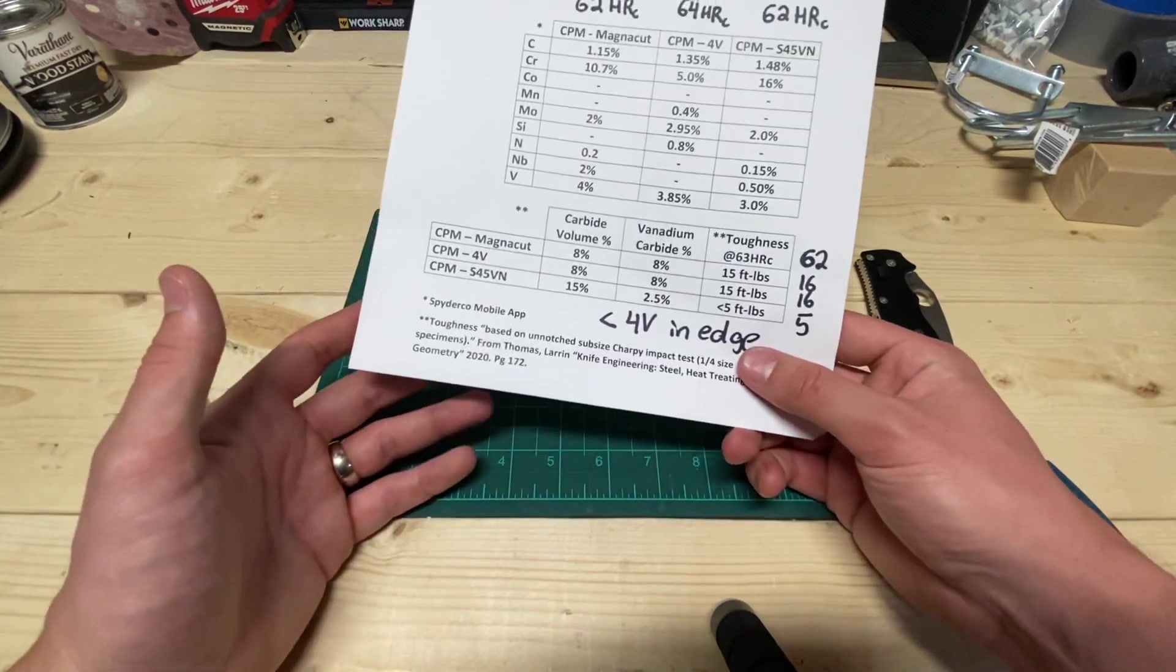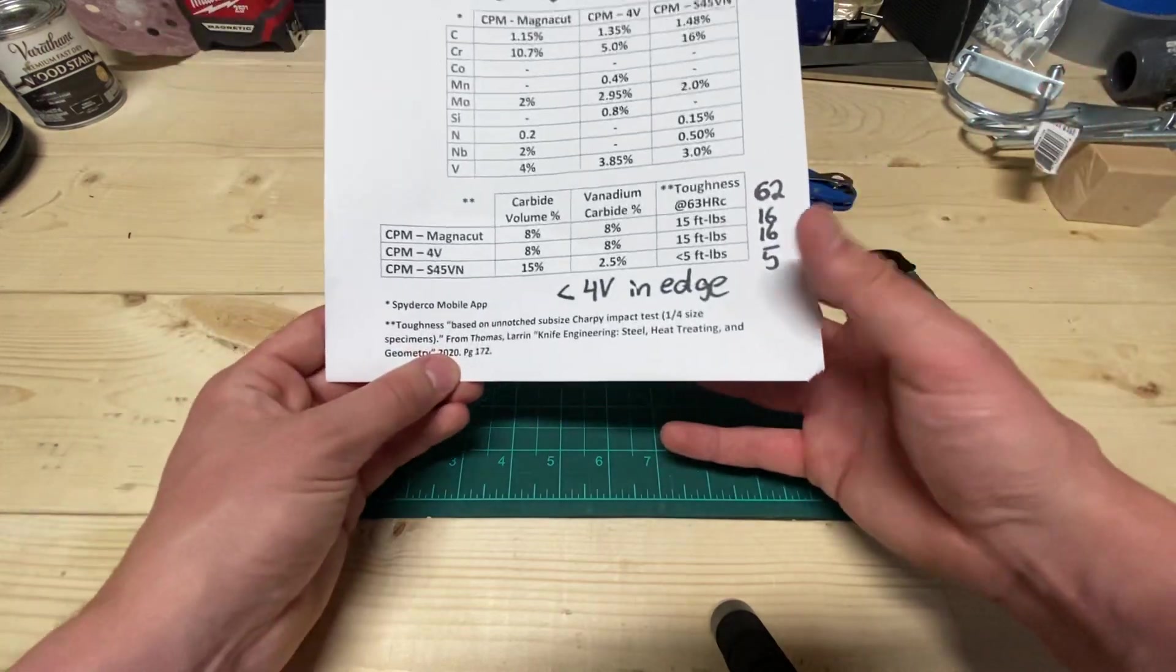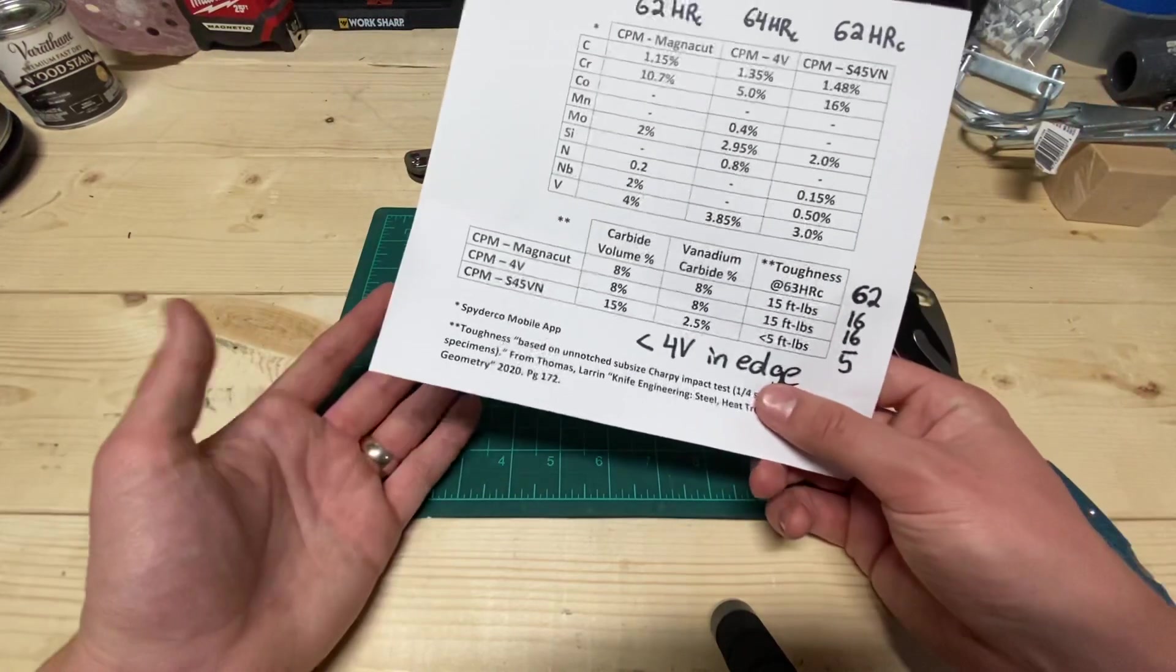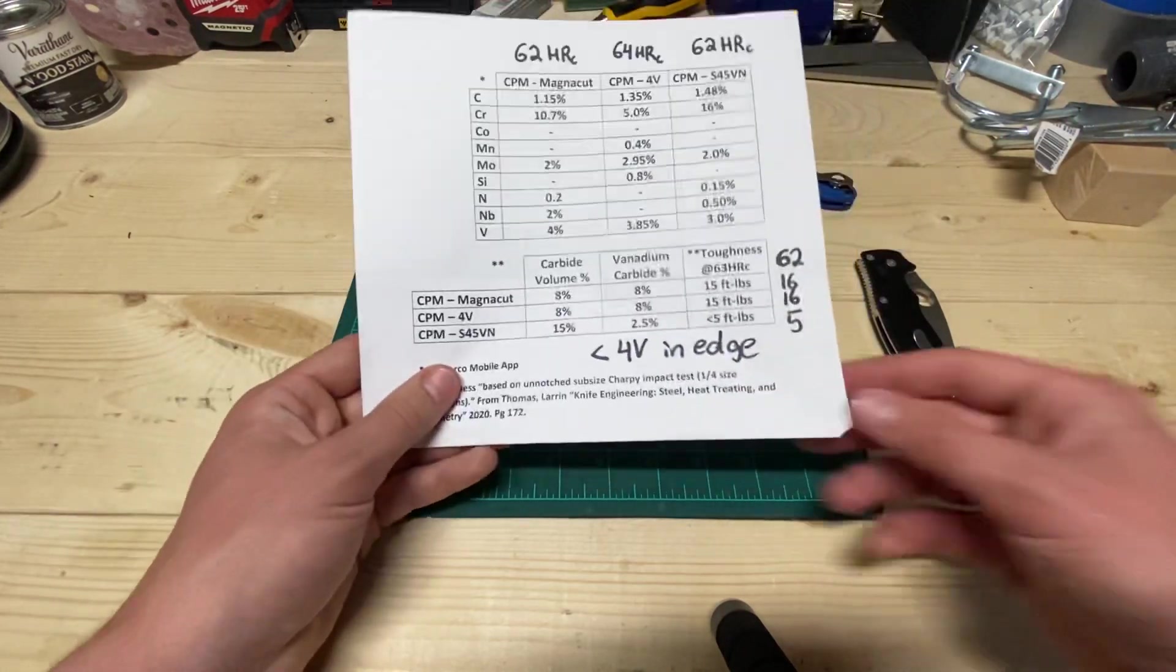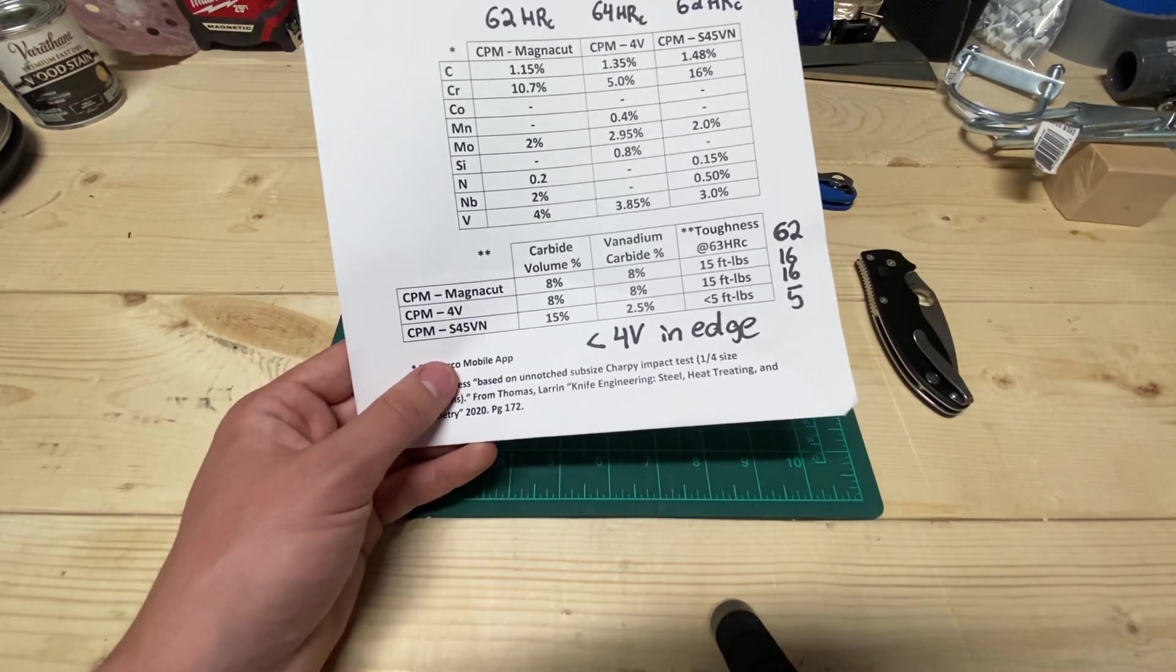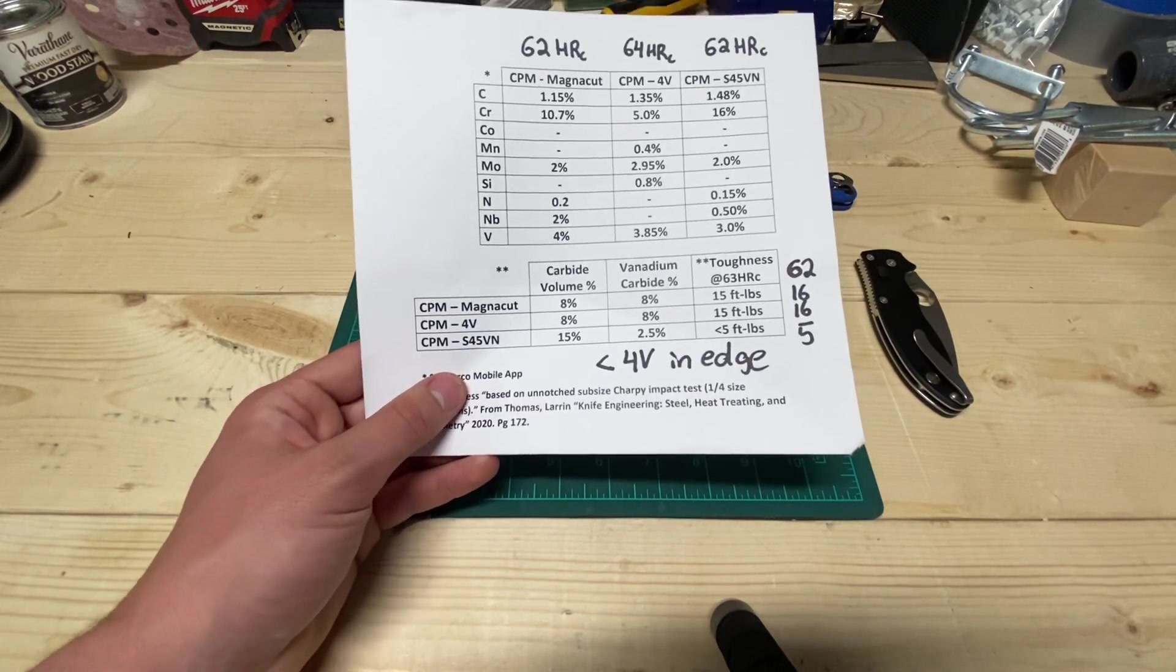So that's its drawback is it's not a ridiculous edge retention thing, but that's not really a drawback. You know, it's all about what you're looking for. Really what MagnaCut is, is a perfectly balanced steel.